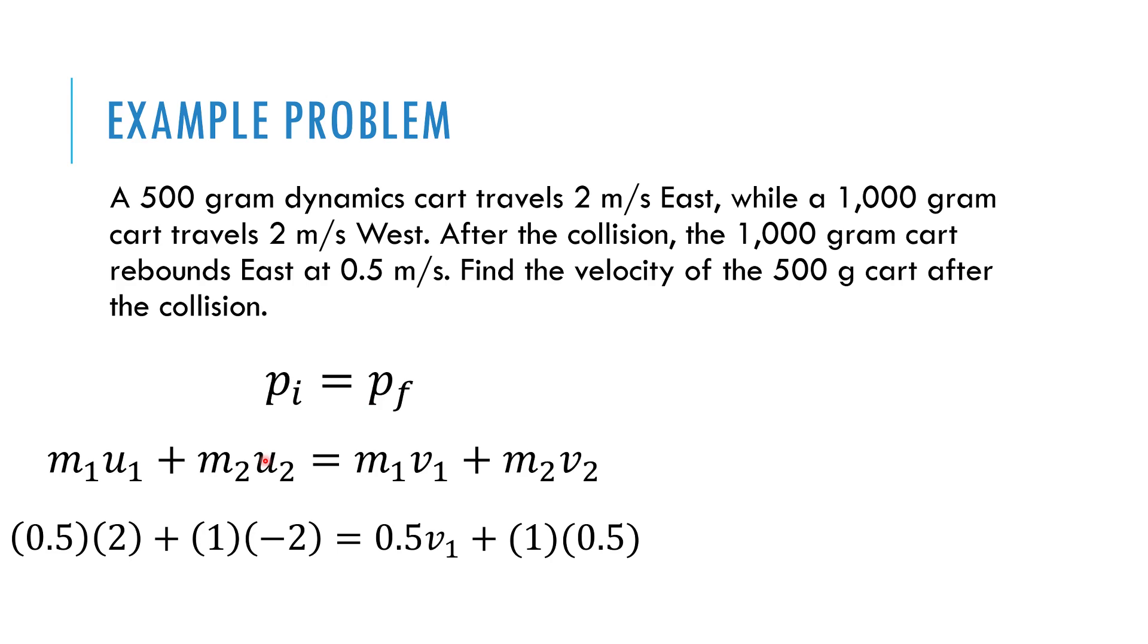So we're going to plug in our values here. Half a kilogram, one kilogram, two meters per second. Notice two meters per second west we're going to use negative for to represent to the west or to the left or in the negative x direction. And then when it rebounds, it rebounds with a velocity of 0.5 meters per second to the east, so it's positive over here. So I have everything I need except for this final velocity of the first cart. I can solve for it and find that it's three meters per second. And if you do this demonstration, or if you remember from class, you will see that it rebounds back quicker, noticeably quicker than it came in. And that comes from conservation of momentum.